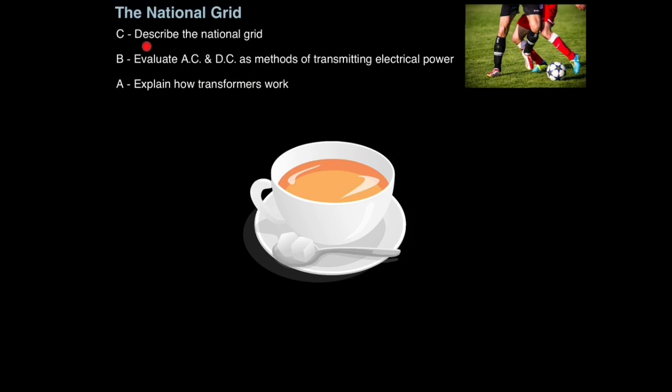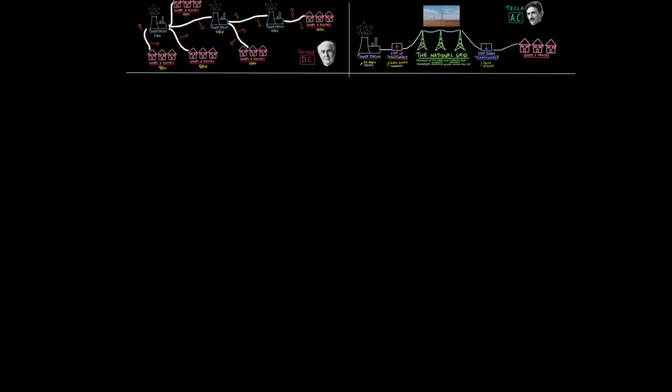So hopefully now you can describe the national grid. So we must be able to compare DC with AC. I'm just going to bring together what we've learned in the last slide. This can easily be a six mark question, and has been. So remember, firstly, larger transmission cables means more expensive for DC. Thinner cables are cheaper.